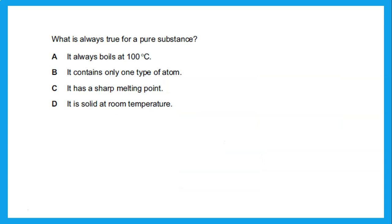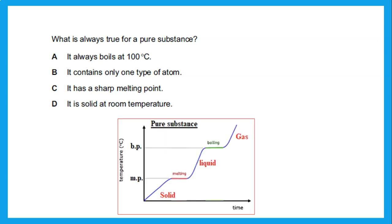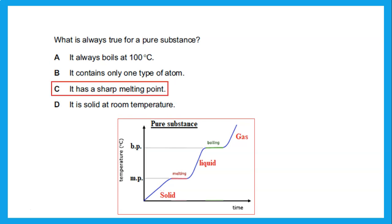Let's look at this question: what is always true for a pure substance? The choice 'it always boils at 100' is wrong — only pure water boils at 100, not any pure substance. 'It contains only one type of atom' is also wrong — pure substances can be elements or compounds. The correct answer is 'it has a sharp melting point.' A pure substance will melt at a specific melting point and boil at a specific boiling point.